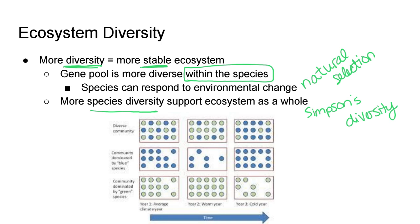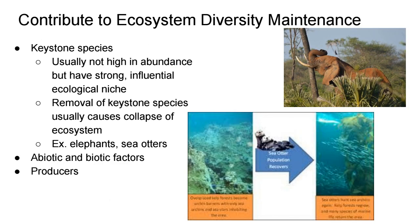In our image here, we can see that ideally a more diverse community would be those along the top that contain multiple kinds of species, and ideally within those species there is also genetic variation.